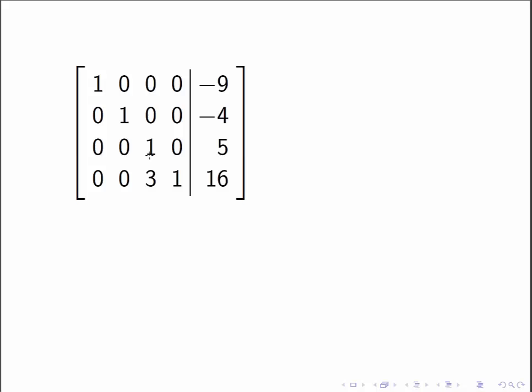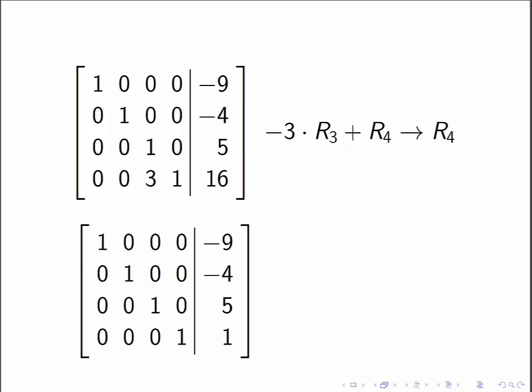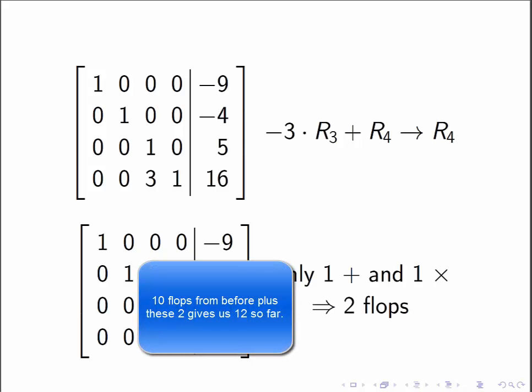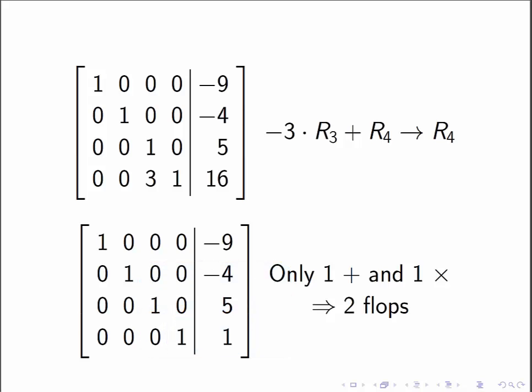Moving on. Now I want to use this value of 1 in order to make this entry be a zero, and that would require the row operation negative 3 row 3 plus row 4 is the new row 4. I'm only doing that on the last column, and so I end up with this, and I have only done one addition and one multiplication, so I've only done two floating point operations. Now, going back to where we were, I have now solved for the vector y. So this is the value, or this is the vector that is the value of y, and then I'm going to use that in order to find the vector x, which was the original solution.